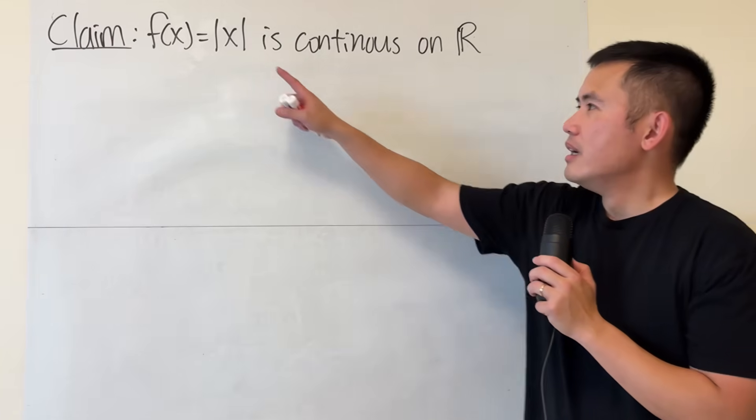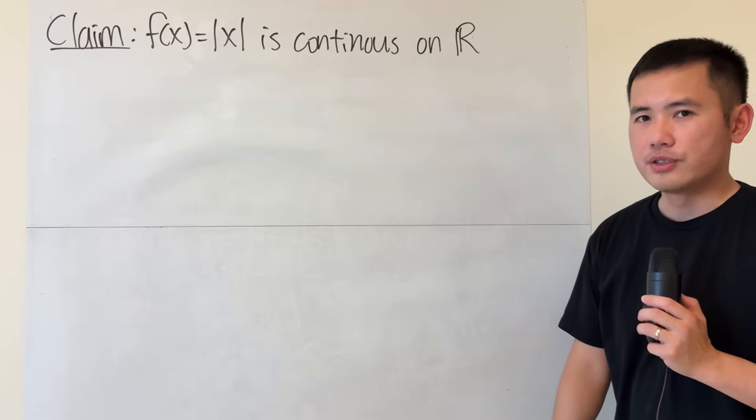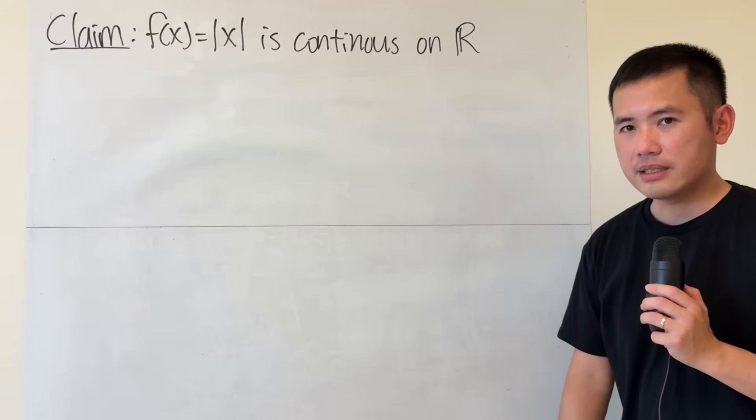Here's my claim: f(x) = |x| is continuous on R, meaning this is true for all real number x.